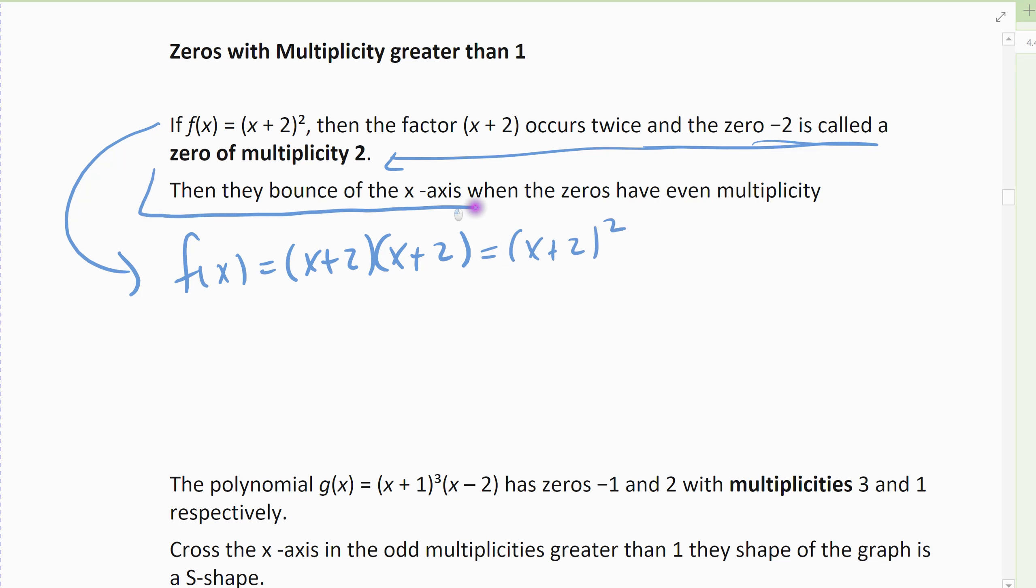When we have a zero with a multiplicity of 2, or actually when it has even multiplicity. Most of ours will be a multiplicity of 2. But 2, 4, 6, however many we want, 8, as long as it's even. So that means I've got multiple of the zero evenly.